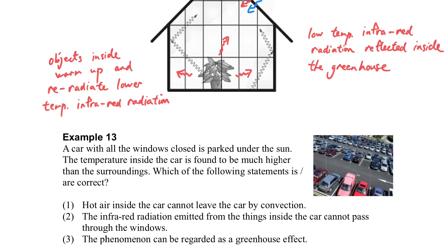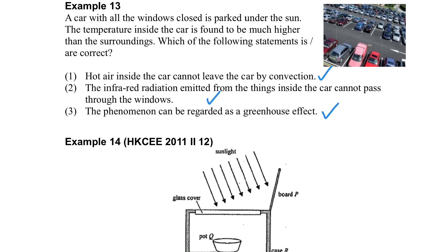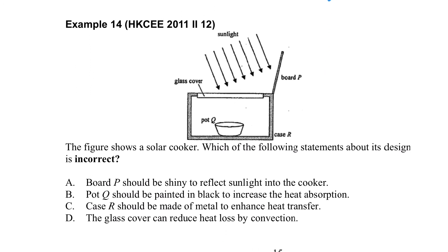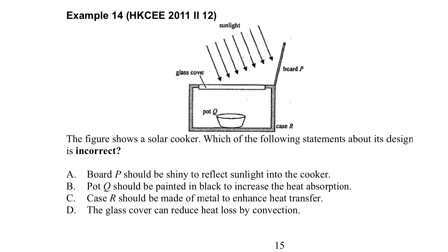So if we consider the car parked, when the car with all windows closed is parked under the Sun, the hot air cannot leave the car, and the infrared will re-radiate inside. This phenomenon can also be regarded as a kind of greenhouse effect.